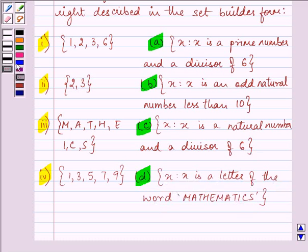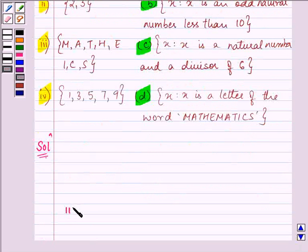So, the first thing that comes into mind is that this set in the roaster form is same as this set. That means our answer will be, we can write our solution as that the part third is same as part D. Right, this is what we have found out from the very first thing.